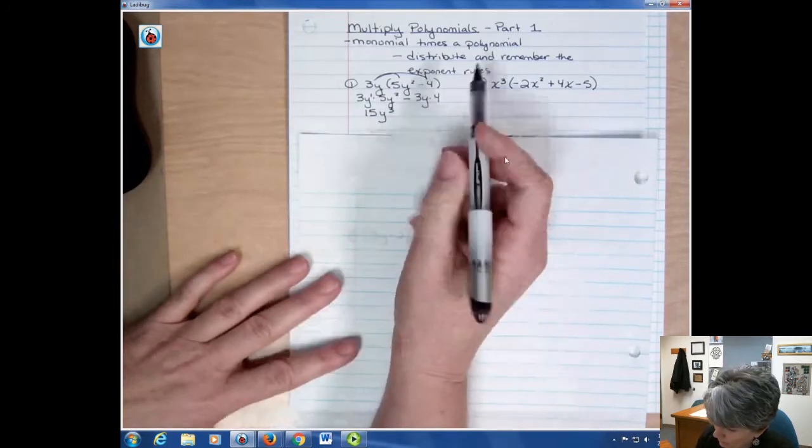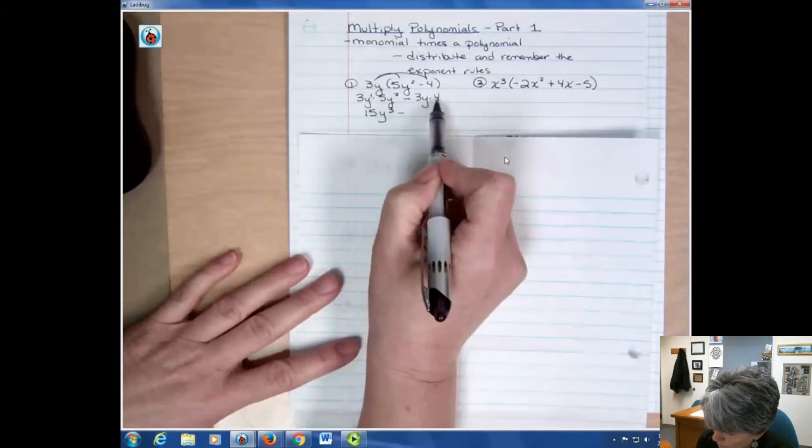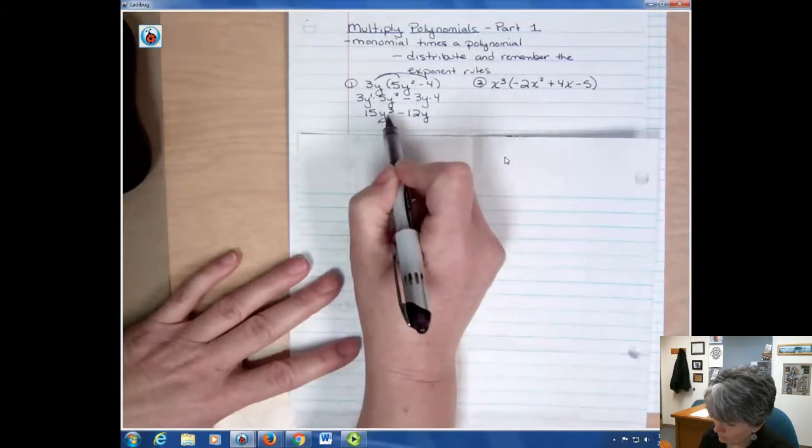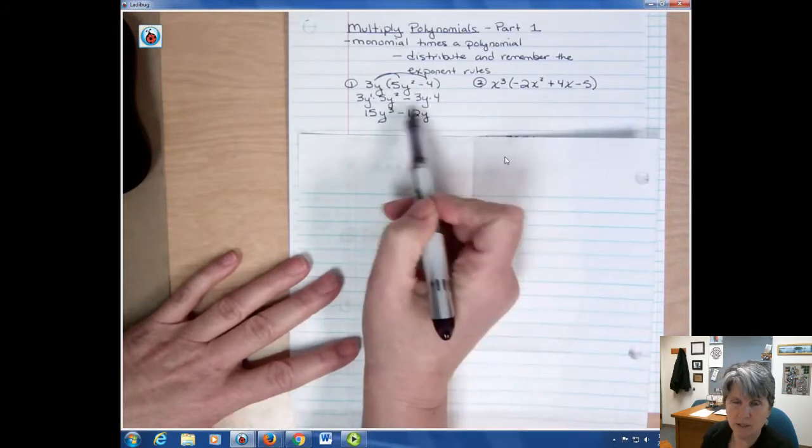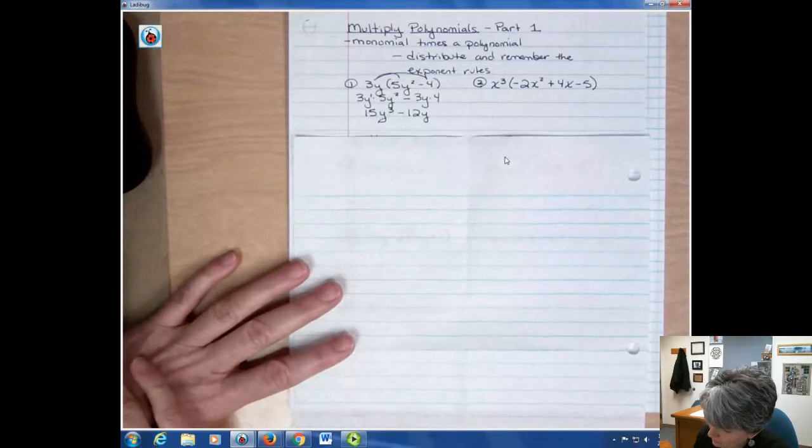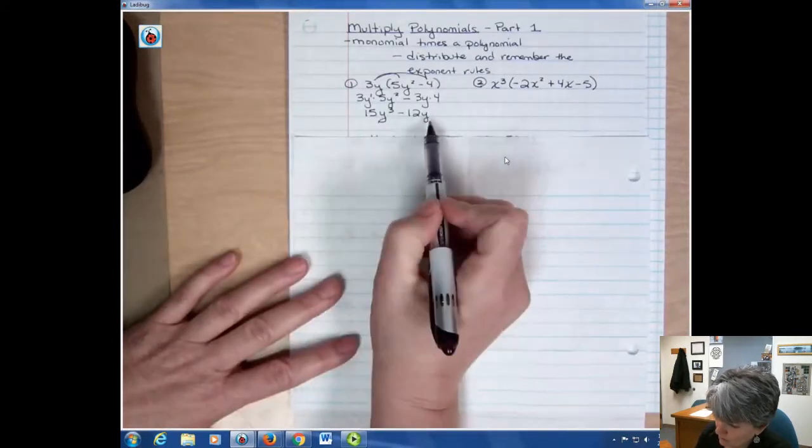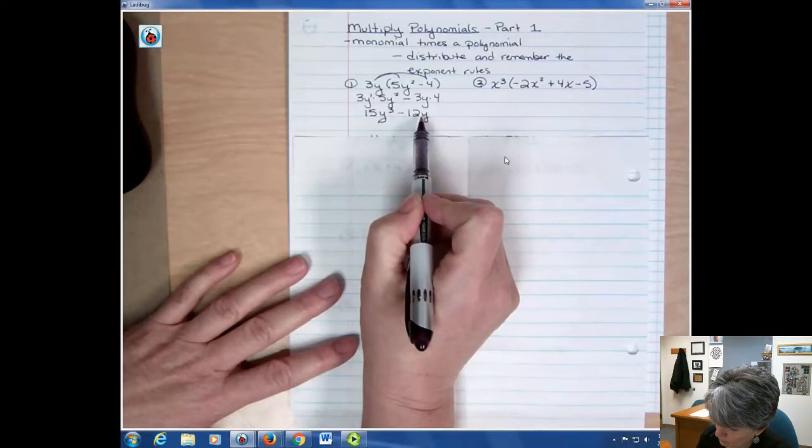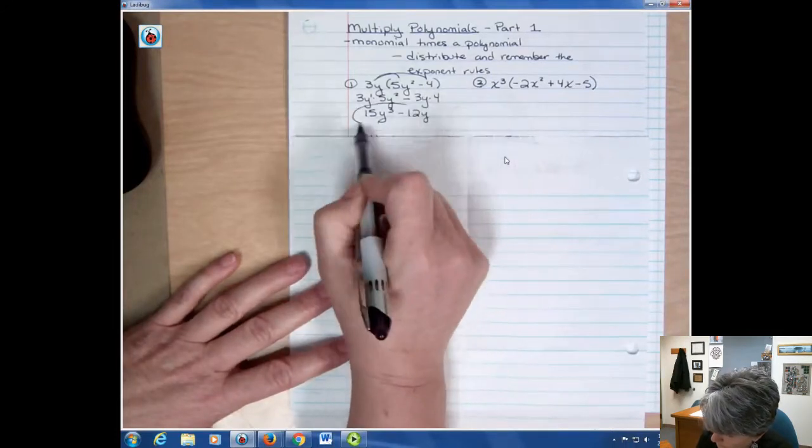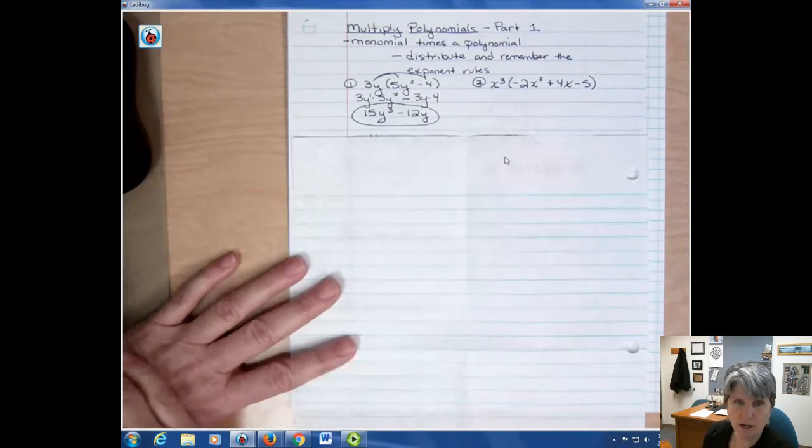In the second one, we have a minus and then we have 3 times 4, which is 12, and there's no more y's, so it's just y. There's nothing else I can do here because these are not like terms. I have different powers. This is a third degree, that's a first degree. So that's all I'm doing is just multiplying that out by distributing.